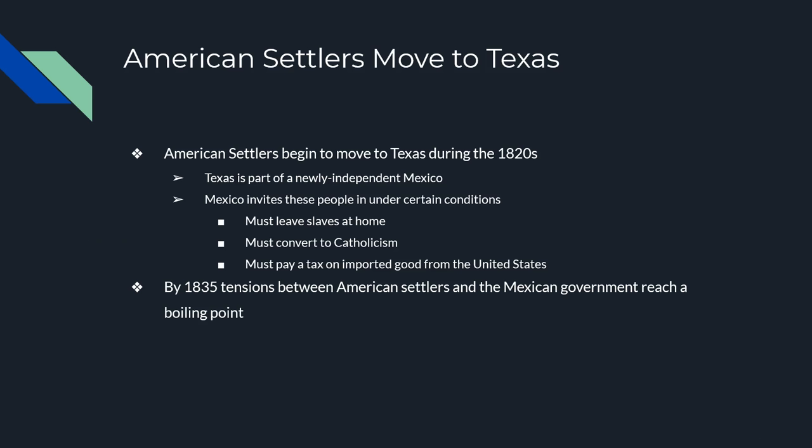Let's talk about Texas. American settlers started moving to Texas in the 1820s. Texas was originally part of Mexico, which had just gotten its independence from Spain. The Mexican government invited settlers to come in with a couple of stipulations: number one, no slaves allowed; number two, you must become Catholic; and number three, you must pay an import tax on anything you bring or get from the United States. Everything was okay for a while, but the American settlers started smuggling more and more things, including slaves and imported goods, and tensions with the Mexican government reached a point of no return.